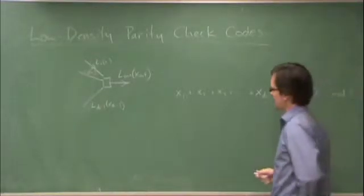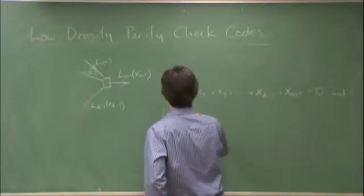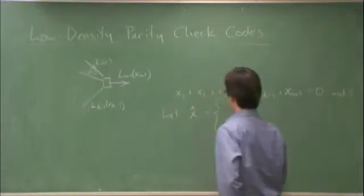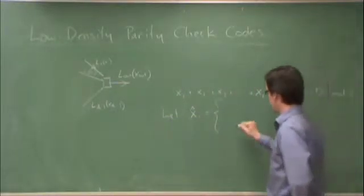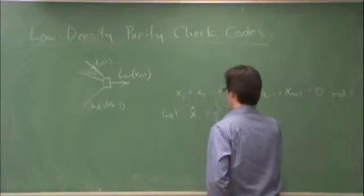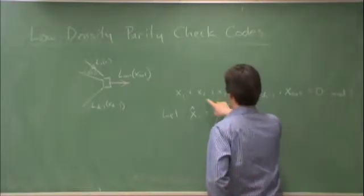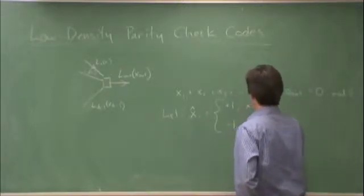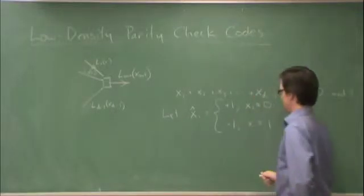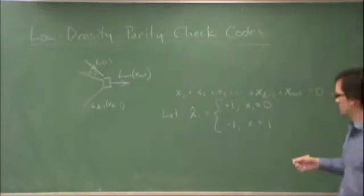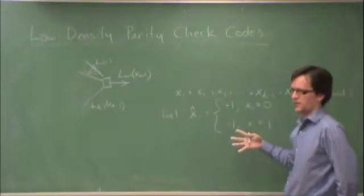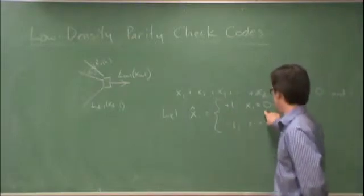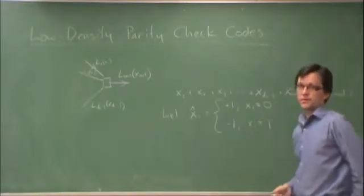Let's let x i hat be equal to plus 1 if the original x i is 0 and minus 1 if the original x i is 1. So in other words, what I'm doing is I'm taking the original x i and I'm assigning, instead of 0, 1, I'm assigning a signed binary value to it. Plus 1 if x is 0 and minus 1 if x is 1.